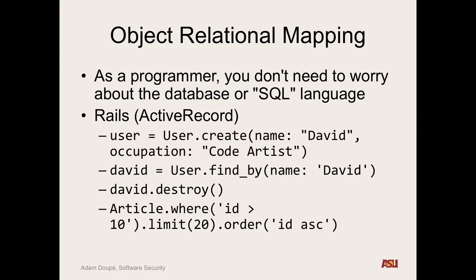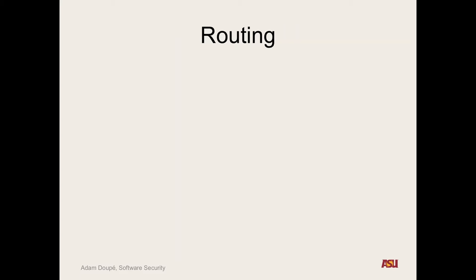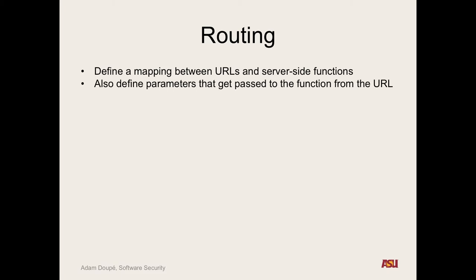One thing was Model-View-Controller, the second was object-relational mapping, the third is routing — dealing with the problem of coupling URLs to files. The idea is to define a mapping between URLs and server-side functions. Instead of having entirely different files for different endpoints, I can say: when you go to `comments/view`, execute this `view_comments` method. That method is the part of the controller that handles it, and you define what parameters get passed to that function.